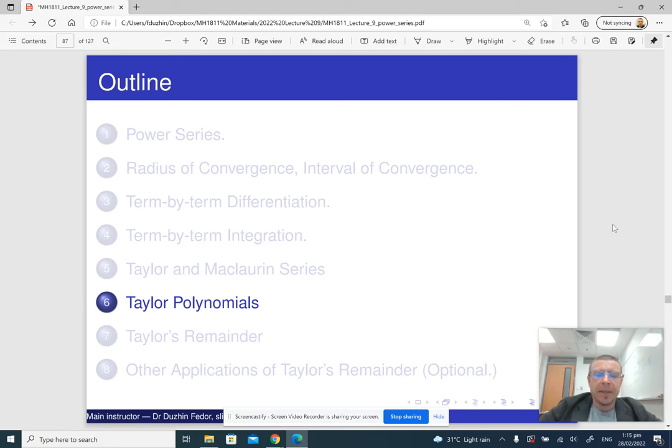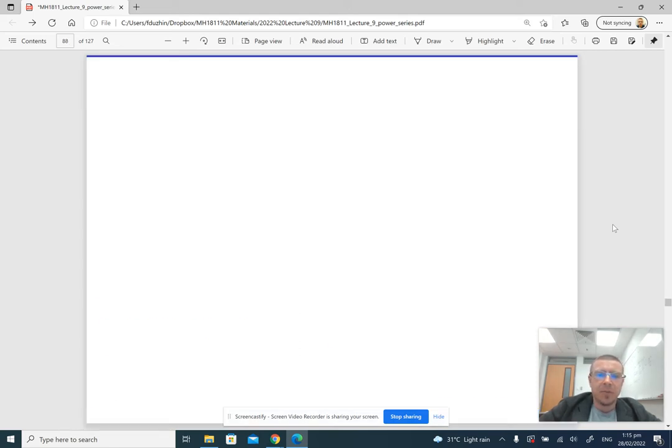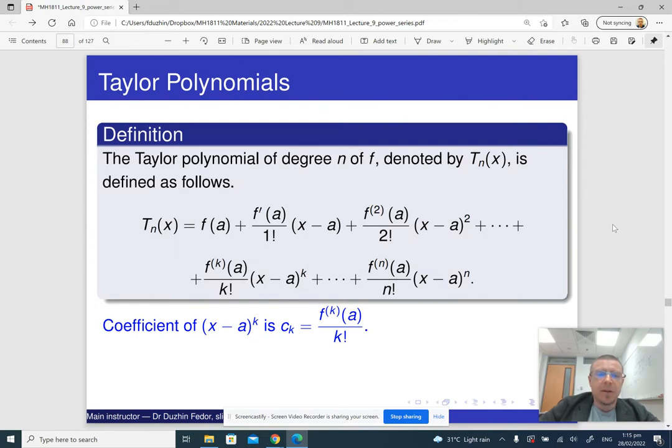In the next part of the lecture, we're going to talk about Taylor polynomials. So what is a Taylor polynomial? A Taylor polynomial is just a finite portion of the Taylor series. The Taylor series is an infinite construction, and if we stop it at some term of degree n, then we get a Taylor polynomial of degree n.